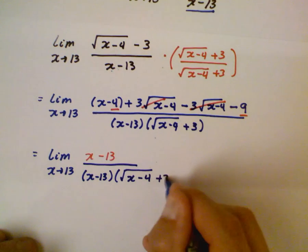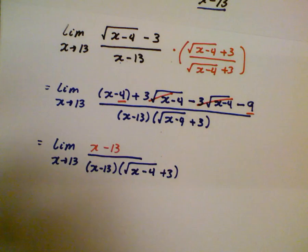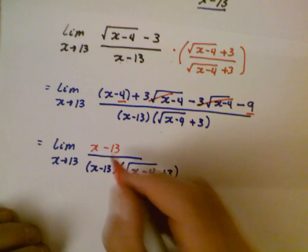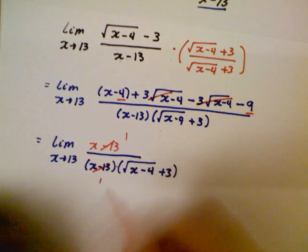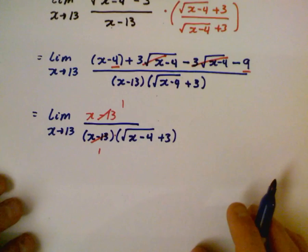They are going to become 1. They're going to simplify. They're the same term. Multiplication here. This is 1. This is 1. That's fantastic for us.